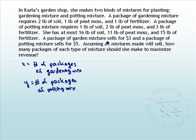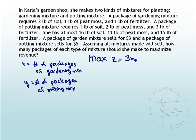Now that we have our variables established, we need to find our objective function. Your possible options are maximize and minimize. Notice we're trying to maximize revenue here, so we're going to write the word MAX. We'll use Z because it's our generic letter. Since we're trying to maximize revenue, notice that each package of a gardening mix brings in three dollars — we have X packages, so that would be 3X. Plus, each package of a potting mixture sells for five dollars — we have Y of those, so that would be 5Y. We're going to maximize this objective function, subject to the following constraints.